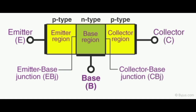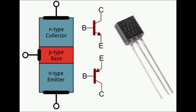This is the construction of a PNP transistor. In a PNP transistor there is a positive layer, a negative layer, and a positive layer. This is the construction of an NPN transistor. In an NPN transistor there is a negative layer, a positive layer, and a negative layer.